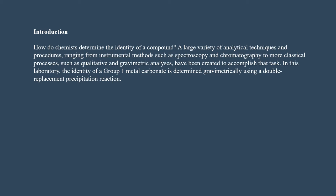A large variety of analytical techniques and procedures, ranging from instrumental methods such as spectroscopy and chromatography, to more classical processes such as qualitative and gravimetric analysis, have been created to accomplish that task. In this laboratory, the identification of a group 1 metal carbonate is determined gravimetrically using a double replacement precipitation reaction.